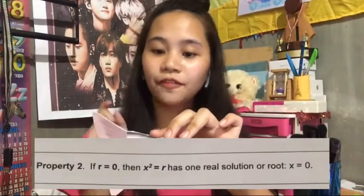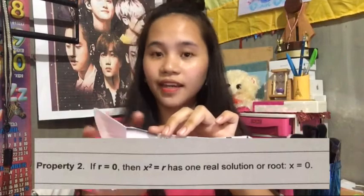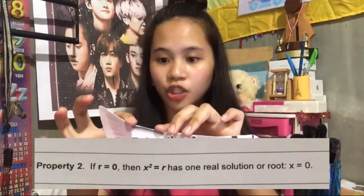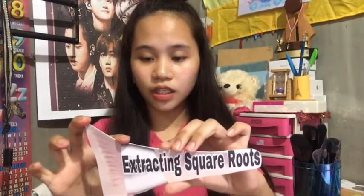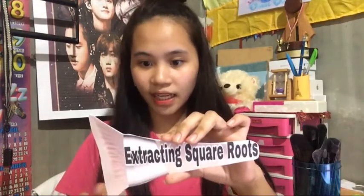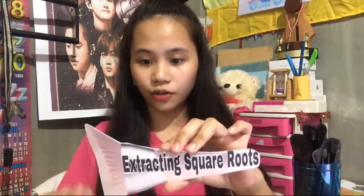Property 2: if r is equal to 0, then x squared equals r has one real solution or root. An example for this is t squared equals 0. Since it is already written in the form x squared equals r, you need to get the square root of 0. The answer is t equals 0 — it has only one solution or root.